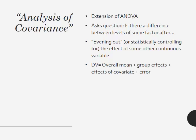So what is ANCOVA? It is the analysis of covariance and it is an extension of an ANOVA. It asks the question: is there a difference between levels of some factor or variable after evening out or statistically controlling for the effects of some other continuous variable? The formula looks something like this: the DV equals the overall mean plus the group effects plus the effects of the covariate plus error.